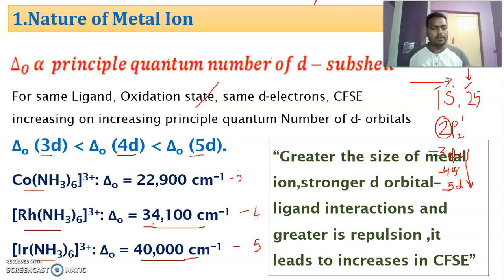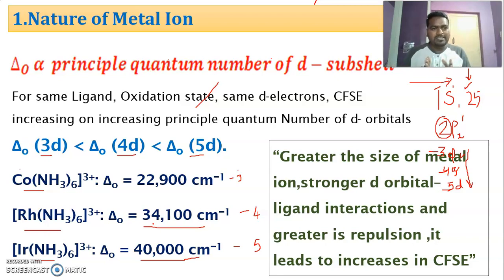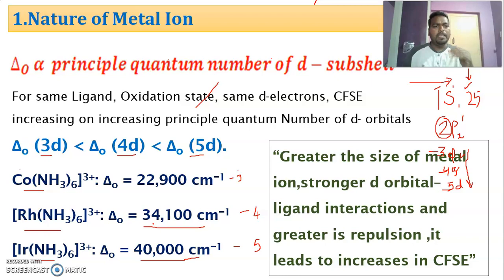Crystal field theory says that when the metal and ligand come nearer, repulsion takes place. If repulsion is more, the splitting is more. If splitting is more, the crystal field stabilization energy — the energy gap — is more. This is the concept: repulsion is directly proportional to crystal field stabilization energy. It all depends on the repulsion and splitting, and you have to connect everything to this.